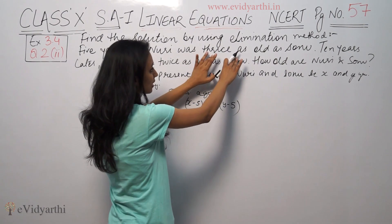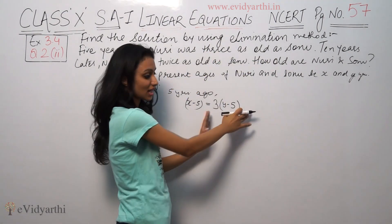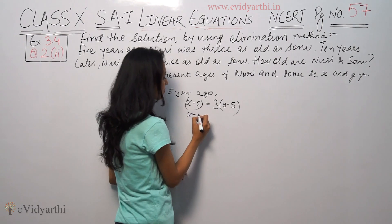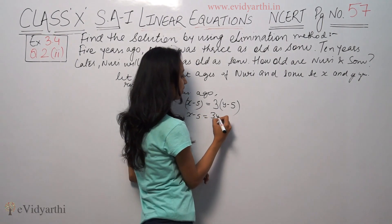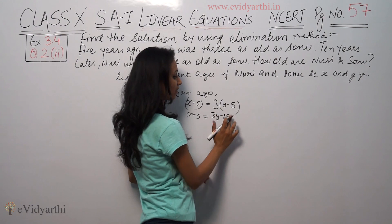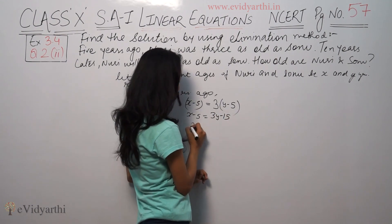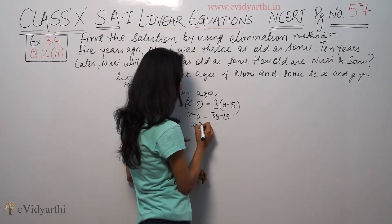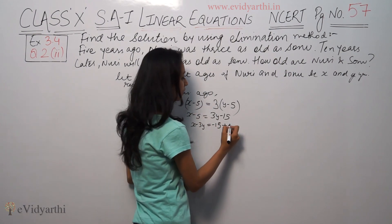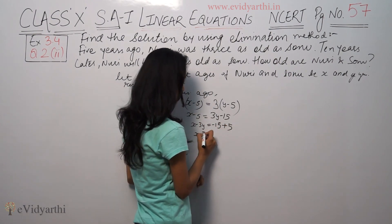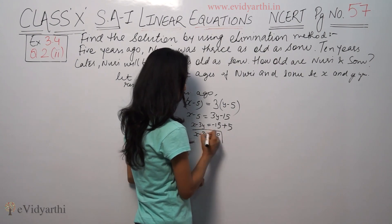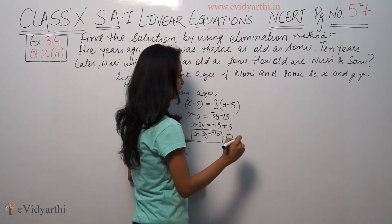So x minus 3y is equal to minus 10. This is our first equation.